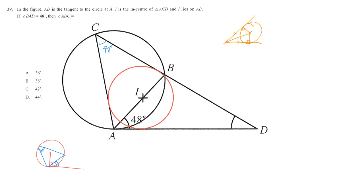So this line and this line are the same length. This angle and this angle are equal. That's why we say that the line from the vertex of the triangle to the in-center is the angle bisector of that angle.